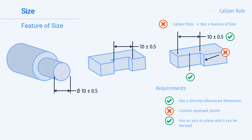To understand why the step down does not have opposing points, let's bring back the step shaft and rectangular hole from earlier. If on both of these features we drew a line following the measurement, it would touch the feature at each end of the line. For the step down, however, if we start the line, it does not touch the part at the end of the measurement.